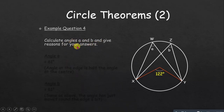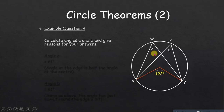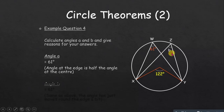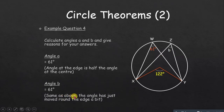Example: calculate angles a and b and give reasons. The center angle is 122 degrees. Angle a is half the angle at the center — the angle at the edge is half the angle at the center — so a equals 61 degrees. Angle b is also 61 degrees, by the same property.